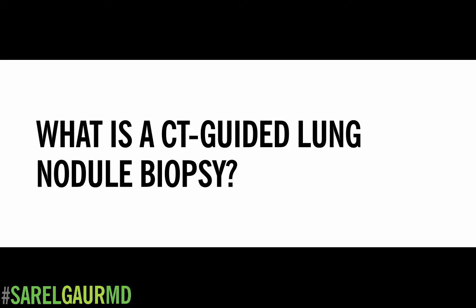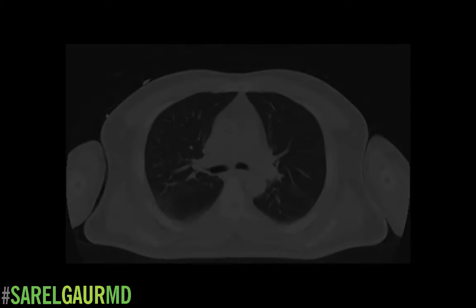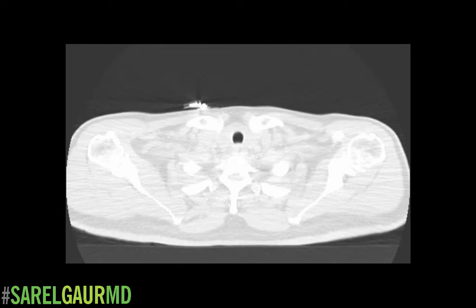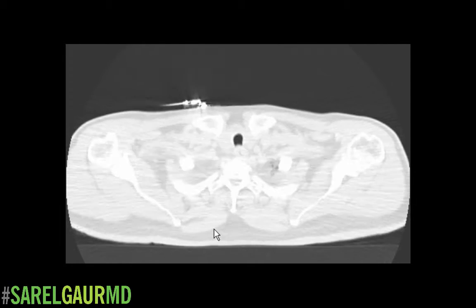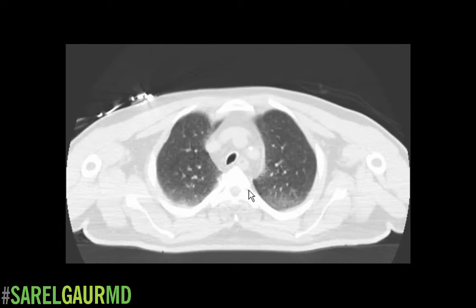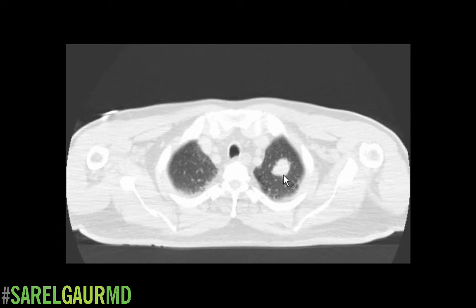The first thing that happens is the patient is placed on a CT table and scanned. Here is the first scan. Here you can see a nodule in the left upper lobe, and this is the nodule we are targeting for biopsy.